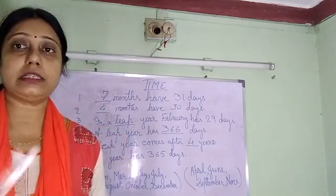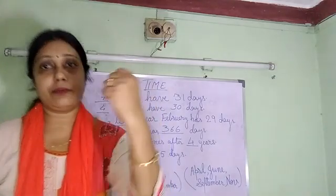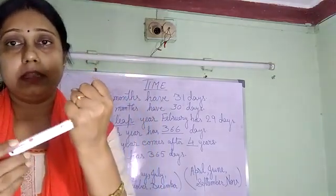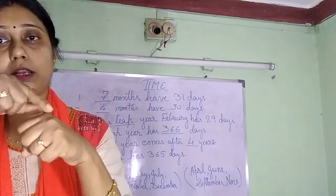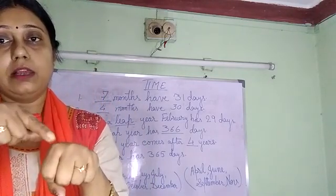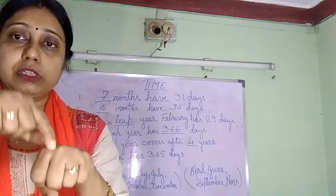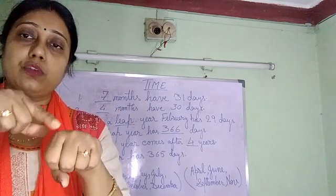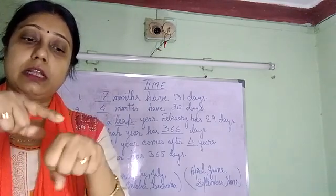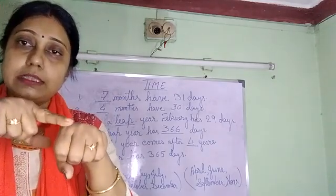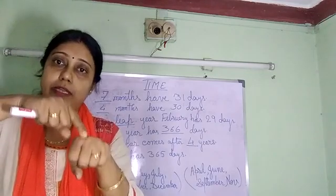Now, how to remember in an easy way which month has how many days? You can make a fist and feel the upper portion — the bone on top. The upper knuckle will be treated as 31 days and the lower portion between knuckles will be treated as 30 days. Whenever we count, the months that fall on top will have 31 days, and those that fall in the lower portion will have 30 days.